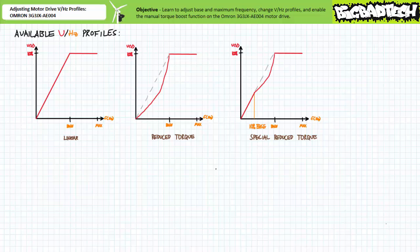This particular motor drive is not limited to solely linear volts per hertz profiles. The OMRON 3G3JX AE004 has three standard profiles available. However, one of the profiles can be altered to include a manual torque boost, so technically it has four volts per hertz profiles. The first is the simple linear volts per hertz profile we just examined. The other two are called reduced torque and special reduced torque. These profiles aren't really user customizable and are again defined by two points: base and maximum frequency. The transition point for the special reduced torque curve is continuously fixed at 10 percent of the current base frequency.